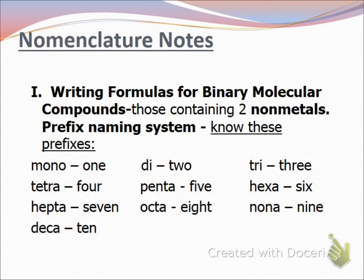These you're just going to have to memorize. Mono means 1, di 2, tri 3, tetra 4, penta 5, hexa 6, hepta 7, octa 8, nona 9, and deca 10.